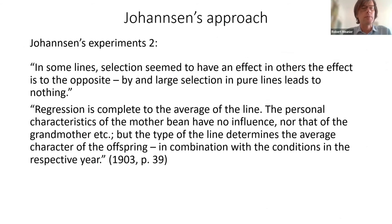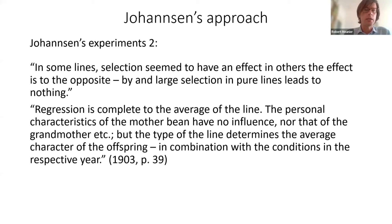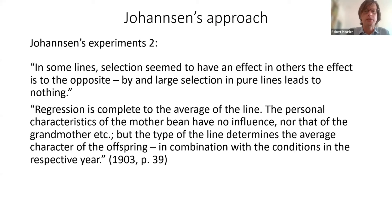Johansson summarizes his results: in some lines selection seemed to have an effect; in others the effect is to the opposite; and by and large selection of pure lines leads to nothing. Regression is complete to the average of the line — the personal characteristics of the mother bean have no influence, nor those of the grandmother. The type of the line determines the average character of the offspring in combination with the conditions of the respective year. The data can be synthesized at the population level, where regression reappears; this gives an alternative explanation of regression — populations are mixes of lines, and mass selection leads to a shift in composition but constitutes an incomplete isolation of lines.